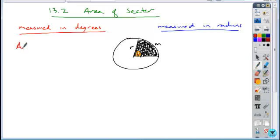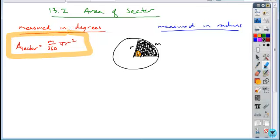The area formula for a sector in terms of degrees is the fraction M over 360 times the area of that circle, so pi r squared. This is the equation for the area of a sector when measured in degrees.